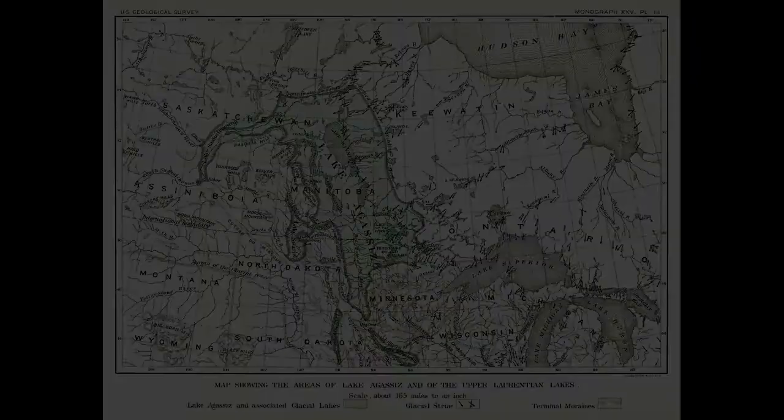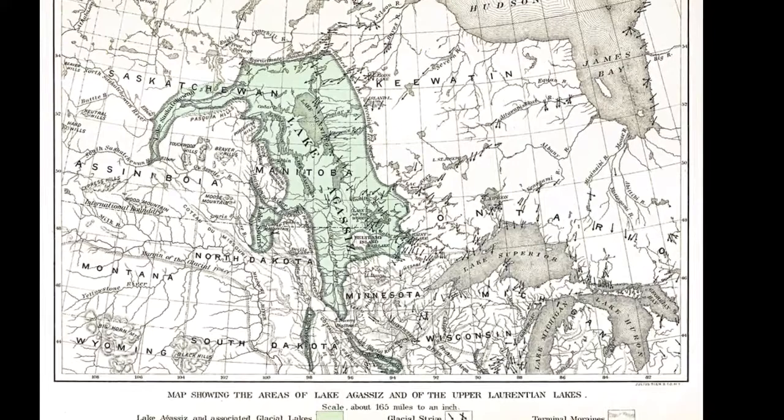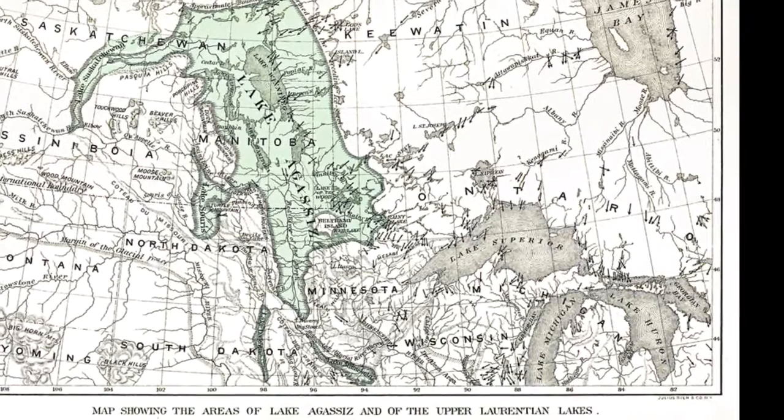When the lake started to melt, the southwestern corner of the province was the first to be exposed. When an eastern outlet opened, Agassiz drained rapidly, probably with catastrophic results. As much as 3,000 cubic kilometers of water — seven times the volume of Lake Erie — coursed into the Superior Basin in just a few weeks.